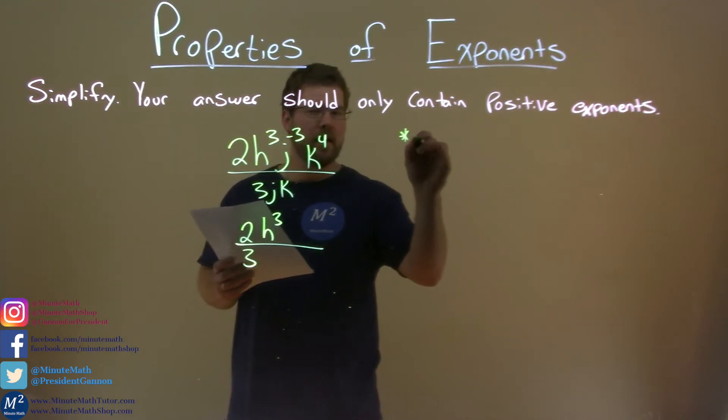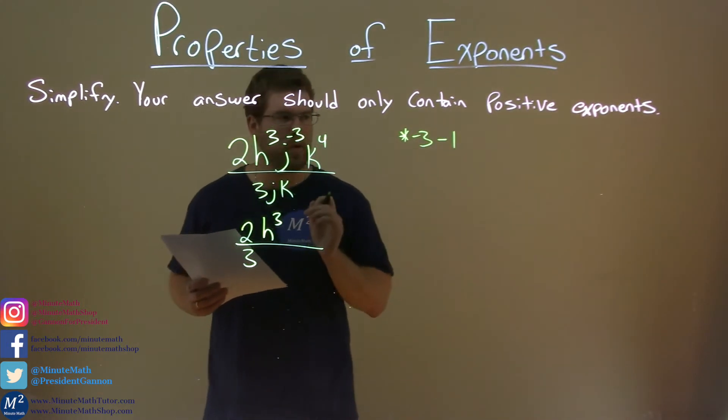Let's look at the j's. Remember, with division we subtract the exponents. Negative 3 minus the first power - that's right there for the j.